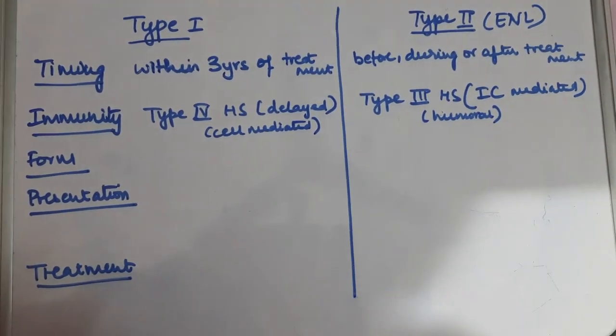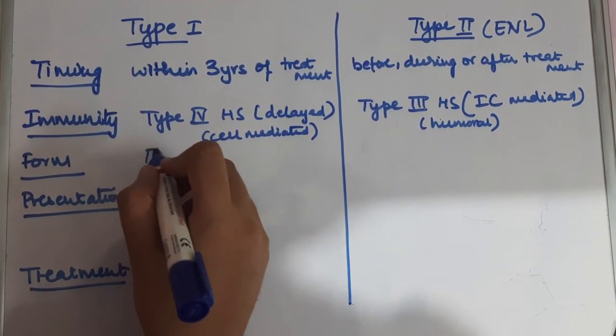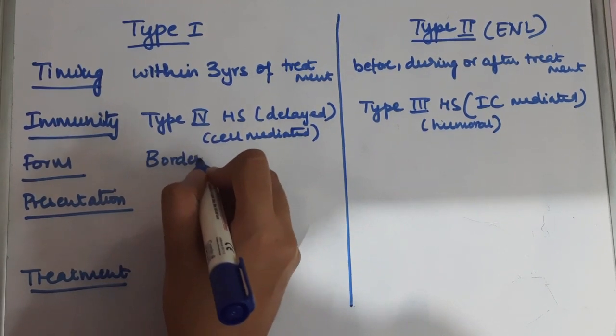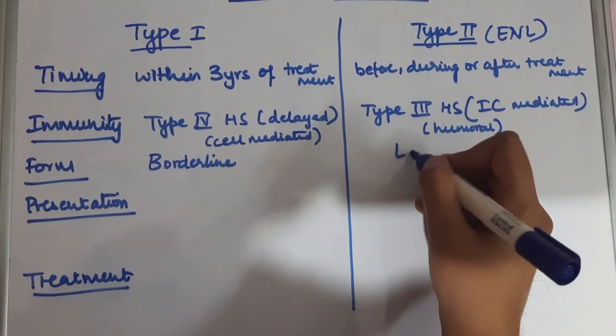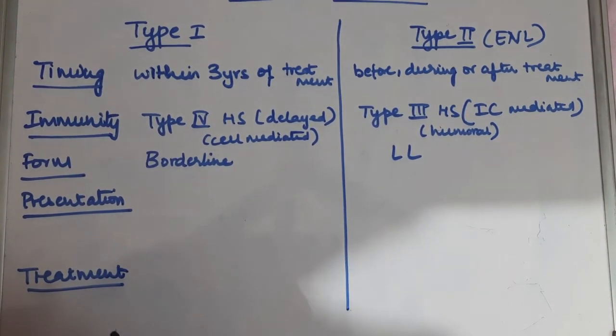Type 1 lepra reactions are seen more commonly in the borderline forms, which is the BL, BB, and BT forms. Whereas type 2 lepra reactions are seen in lepromatous leprosy, the LL form.